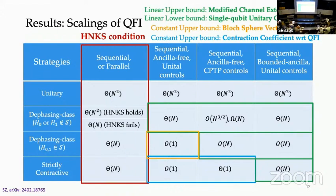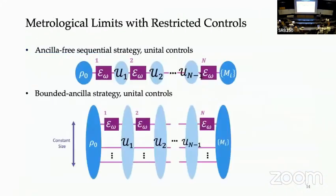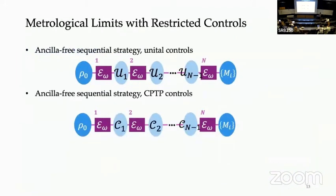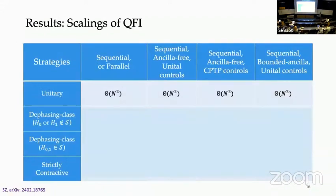Q: For the dephasing-class channel where HNKS holds, is the only difference between the sequential ancilla-free strategy and the full sequential strategy just removing the ancilla? A: I'm also restricting to unitary control only. In the full sequential strategy, having ancilla effectively allows mid-circuit measurements via deferred measurement. In the restricted strategy, I don't allow sufficient ancilla, so you cannot do measurements as many times as you want.